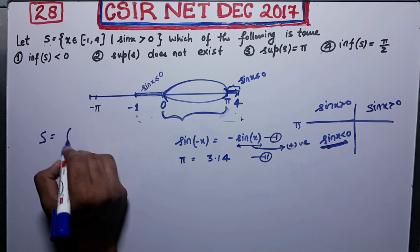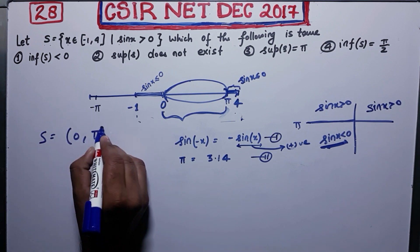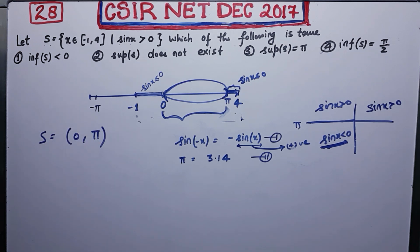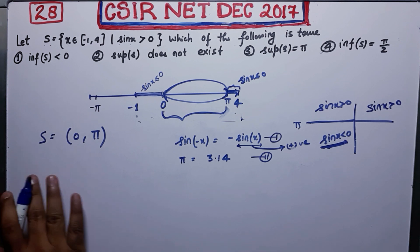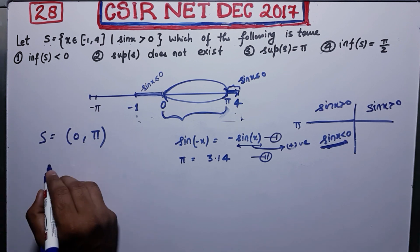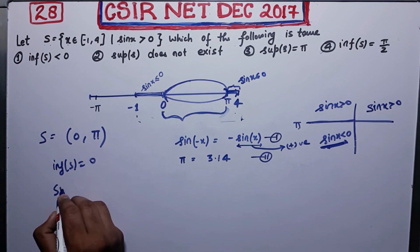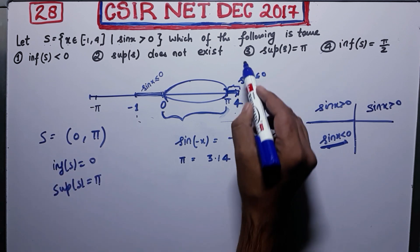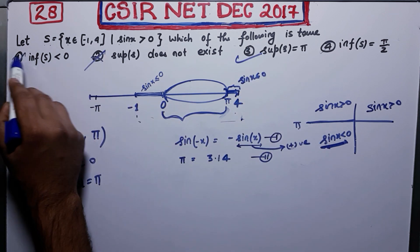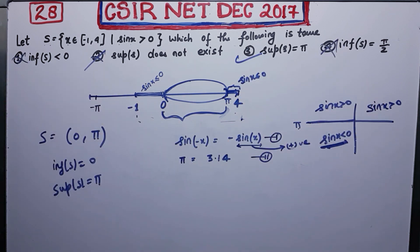So from here, what you are getting? That S is equal to (0, π). This is a very easy question. Just you have to think graphically, then you are done with this question. So S is equal to (0, π). So from there, what you can say? Infimum of S is 0 and supremum of S is π. So therefore, your third option is correct and all other options are false.